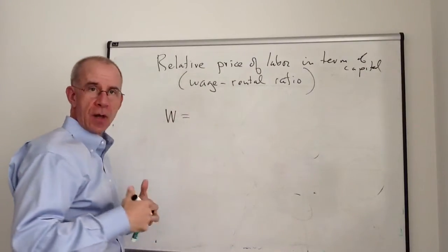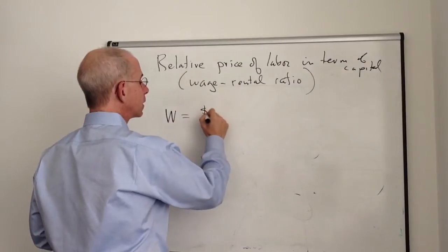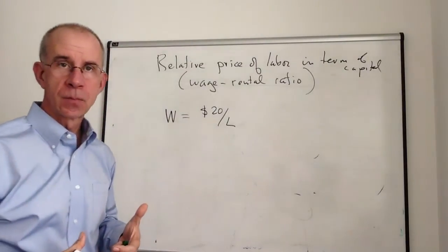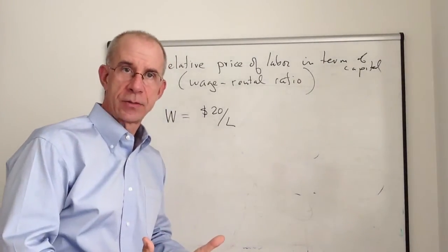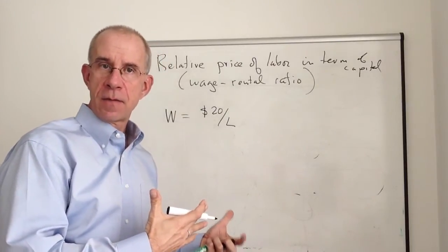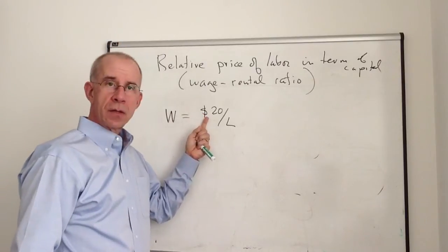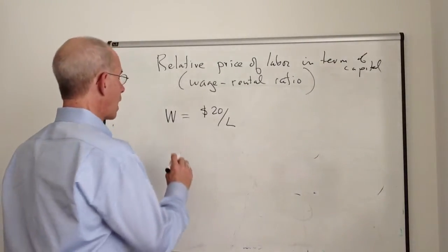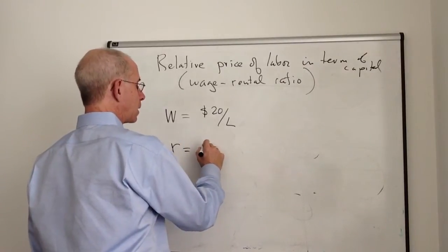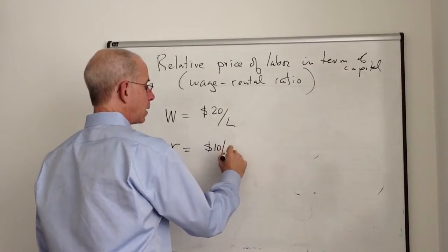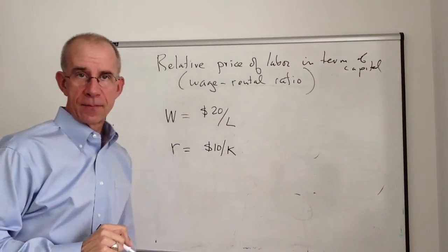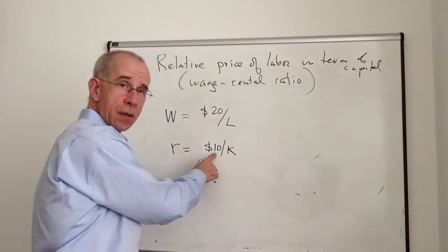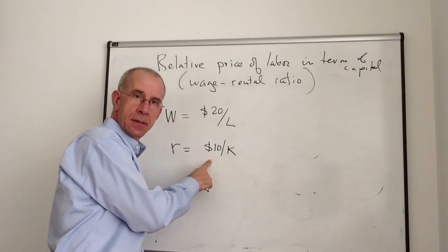So let's say that we've got the cost of labor as being $20 for an hour of work. This is the nominal wage, just like a nominal price that we saw in another video. $20 for every unit of labor that a firm employs. And let's say that a comparable expression can be derived for capital. That is, the payment for a unit of capital is $10. This is the nominal cost of capital.